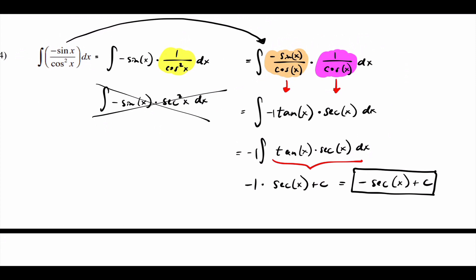The anti-derivative of secant tangent (or tangent secant) is secant of x, so the answer is negative one times secant of x plus C, which is negative secant of x plus C. When you have a fraction, break it up — and if the first way doesn't work, try again a different way.